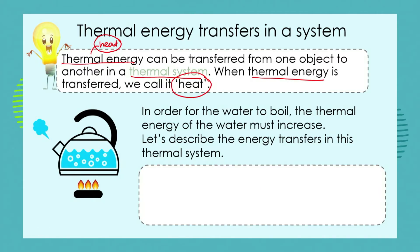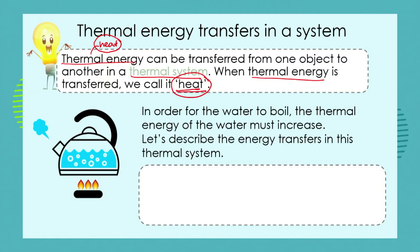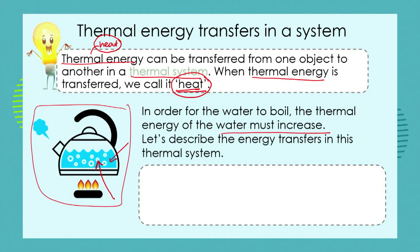Remember that in a mechanical system we would say that forces were at play to move things around. Now we know thermal systems rely on heat energy. So in order for this water inside the kettle to boil, the thermal energy of the water must increase — but it can't increase by itself, because the law of conservation of energy says we can't create heat energy. That energy it needs in order to boil must come from somewhere. We must transfer energy into that water. Looking at this very simple thermal system and looking at that picture, can you describe the energy transfers that are happening?